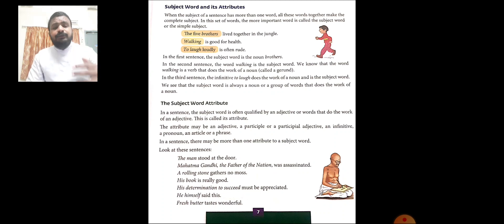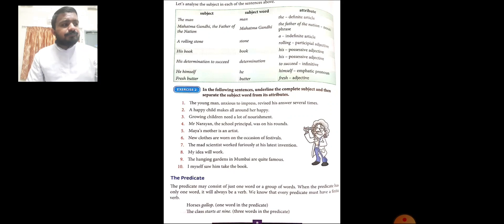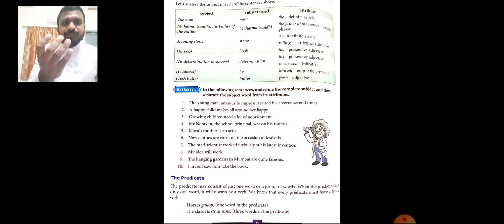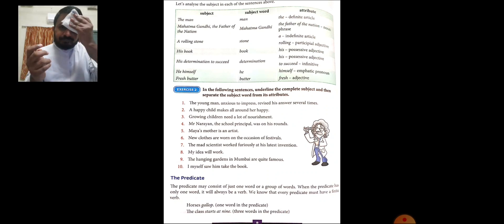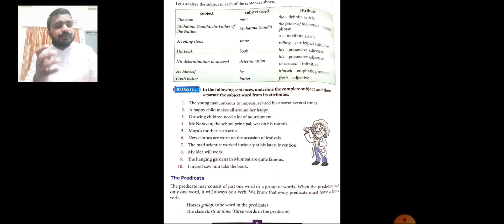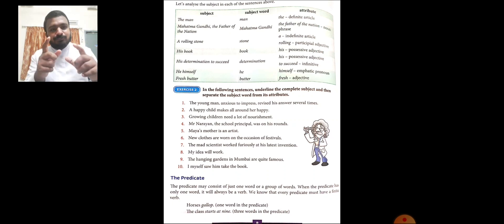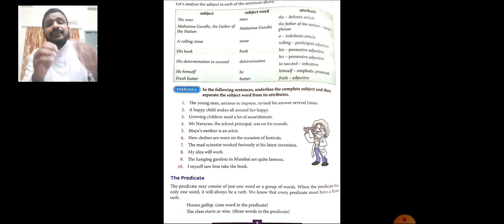Now look at the sentences given in the example. The first sentence: The man stood at the door. There, the complete subject is the man. The subject word — the most important word — is man. And the is being used as an attribute; it is a definite article. Now look at the next sentence: Mahatma Gandhi, the father of the nation, was assassinated. The complete subject is Mahatma Gandhi, the father of the nation. The subject word is Mahatma Gandhi. Then the father of the nation is an attribute, and that attribute is a noun phrase.